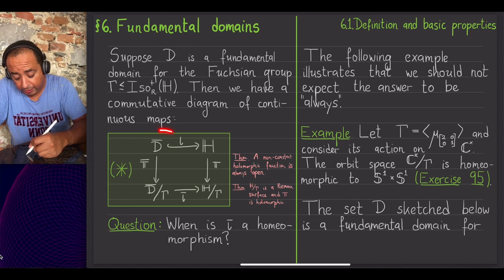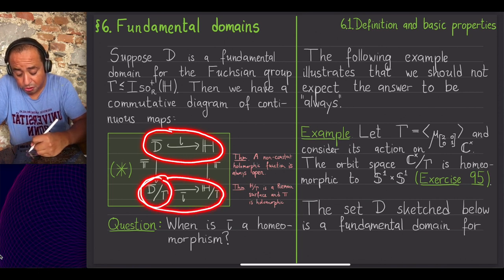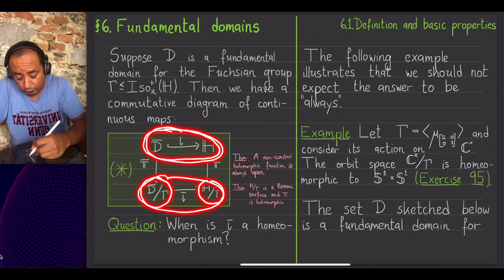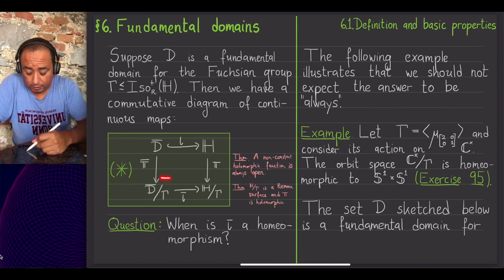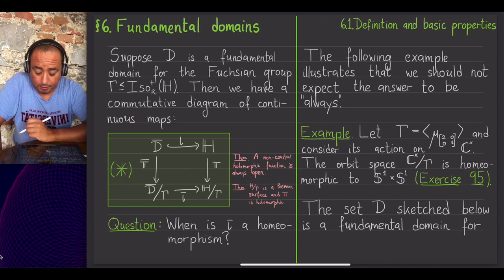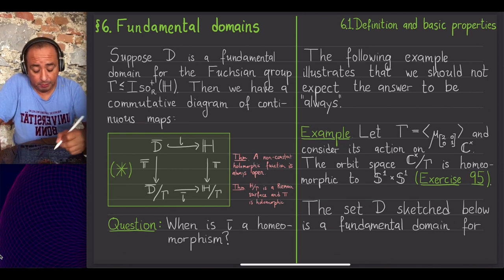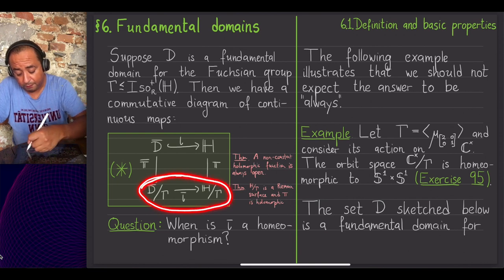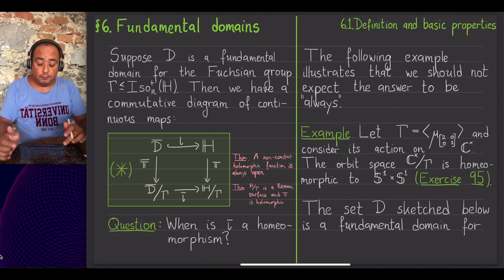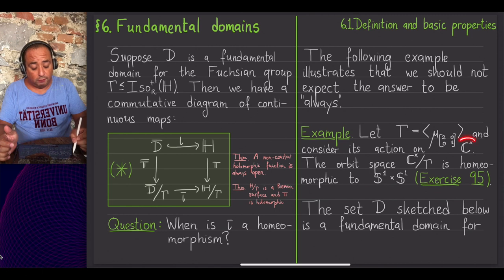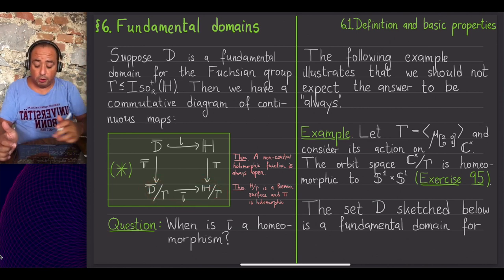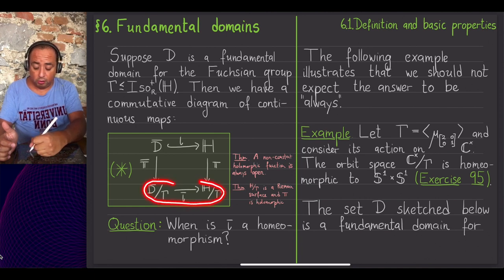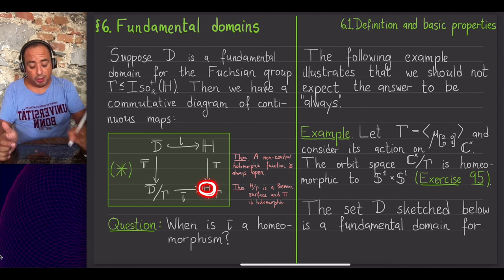More formally, we would like the continuous function from the glued space to the orbit space — induced by the inclusion of D-bar into H — to be a homeomorphism. We gave an example showing we should not always expect this to be the case, and although that example involved the non-zero complex numbers rather than H, later on we will give an example where it fails using H directly.